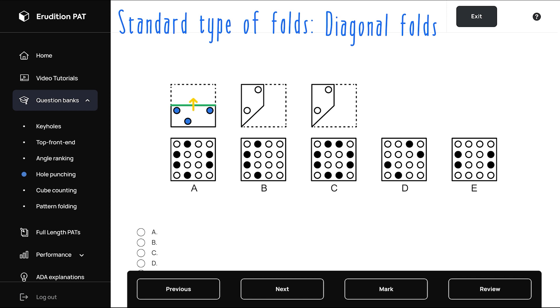In the final step all three holes are duplicated and mirrored up to the top half of the paper. And our final pattern matches choice A.